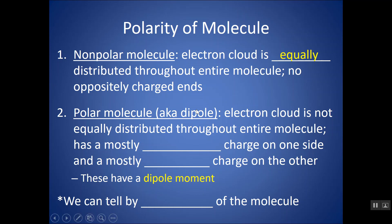A polar molecule, also called a dipole — these are synonyms — is when the electron cloud is not shared equally. One end might have a positive charge and the other side would have a slightly negative charge, which is called having a dipole moment, when one end is slightly positive and one end is slightly negative. So how do you know if a molecule is polar or non-polar?